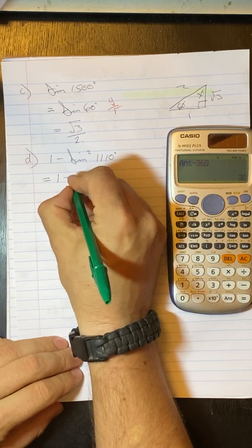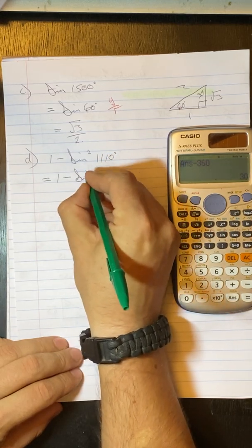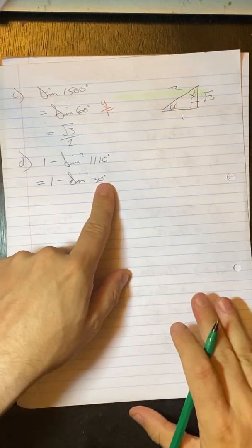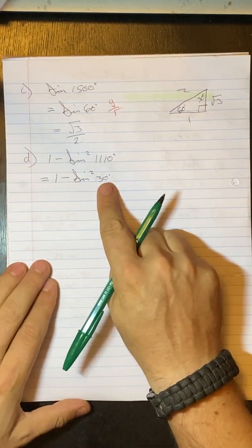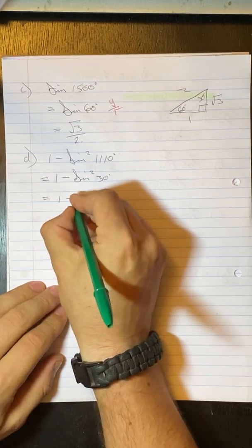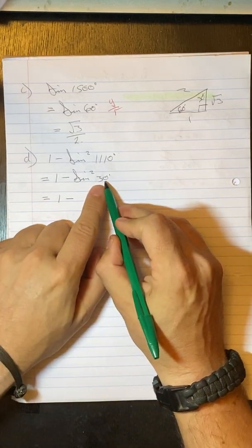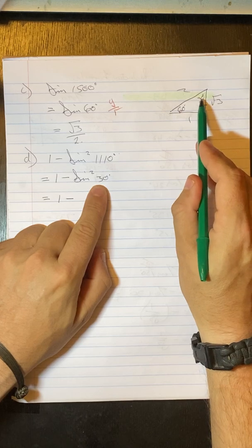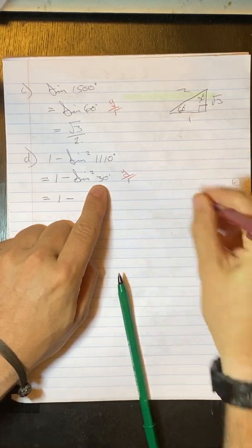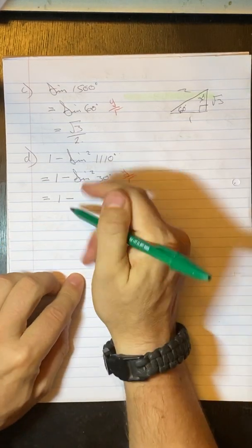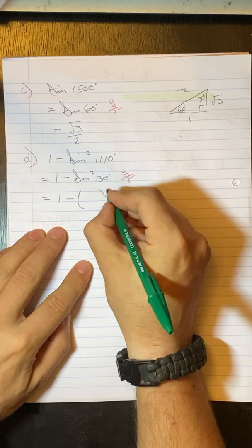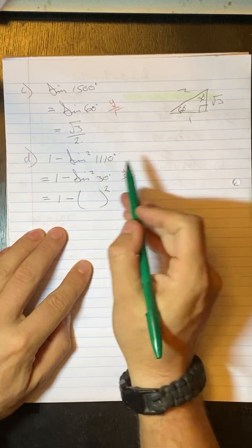So we've got here 1 minus sine squared 30. Now, I don't have to reduce this because it's an acute angle. Okay. Equals 1 minus. Now, this is a special angle over here. And we know that sine is y over r. And what I want to do before I do that, grade 11th, we know we're going to have this whole thing is squared. Okay.